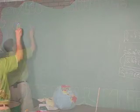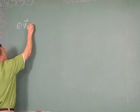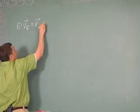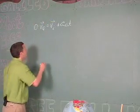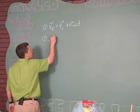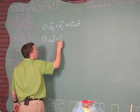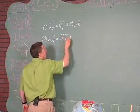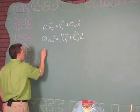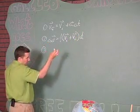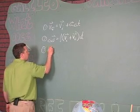Equation number one was VF equals VI plus A delta T. Equation two, delta D equals one-half VI plus VF delta T.